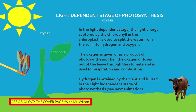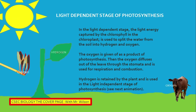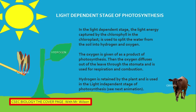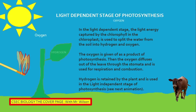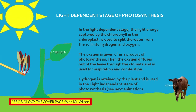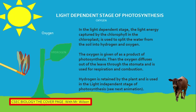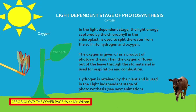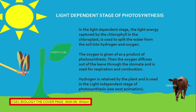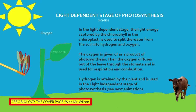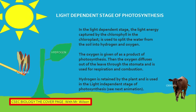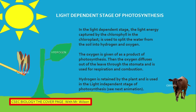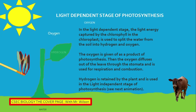The oxygen diffuses out of a leaf through the stomata and is used for respiration and combustion. Hydrogen is retained by the plant and is used in the light-independent stage of photosynthesis.